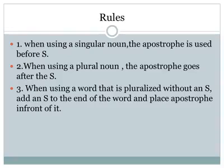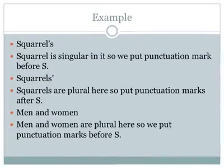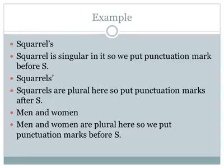Number three: when using a word that is pluralized without an s, add an s to the end of the word and place an apostrophe in front of it. For example, a squirrel — squirrel is singular, so we put the punctuation mark before s. Squirrels — squirrels are plural, so we put the punctuation mark after s.